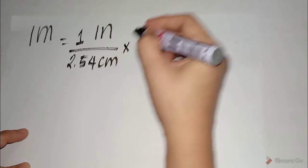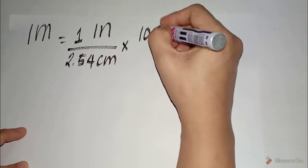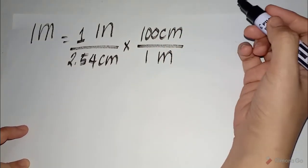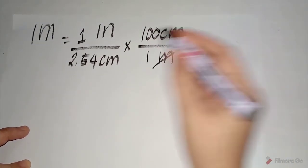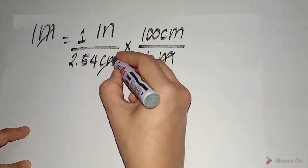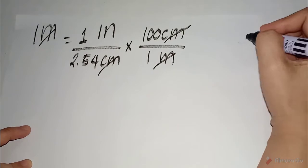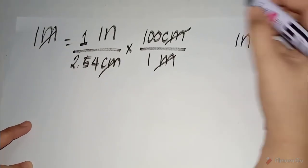We can use 100 centimeters in 1 meter. Therefore, we can cancel the units meter, meter, centimeter, centimeter. Now, the remaining unit that we have is inches.